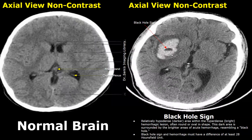The black hole sign is the name given to a well-defined hypodense area within a hyperdense hemorrhage. A dark, well-defined area is seen within the hemorrhage, not surrounded by heterogeneous areas. Usually it is oval in shape — the dark area is surrounded by the bright hemorrhage, resembling a black hole. The black hole sign requires a density difference of at least 28 Hounsfield units between the dark area and the surrounding hemorrhage.